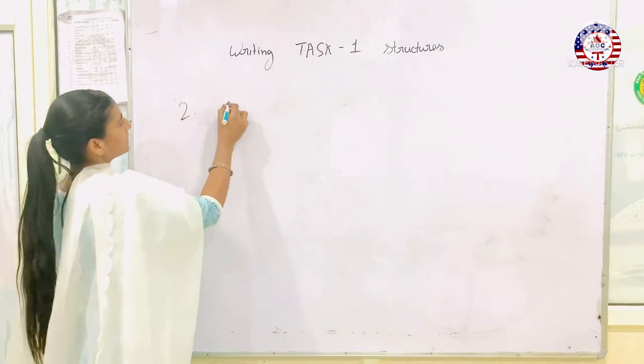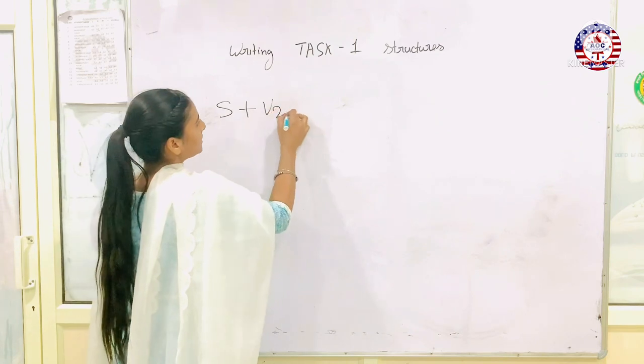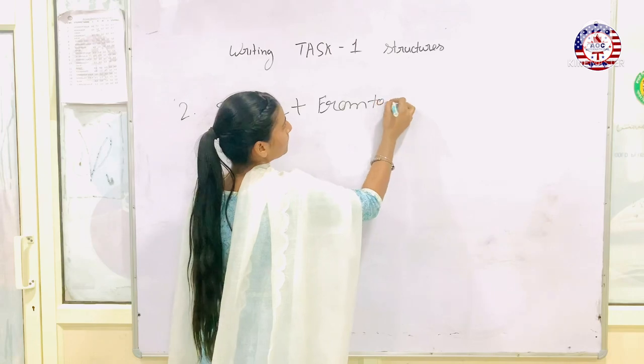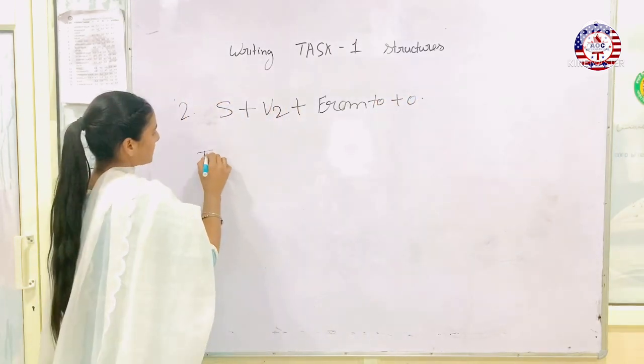The second structure is simple subject, plus verb in the second form, plus from, to, plus object. For example...